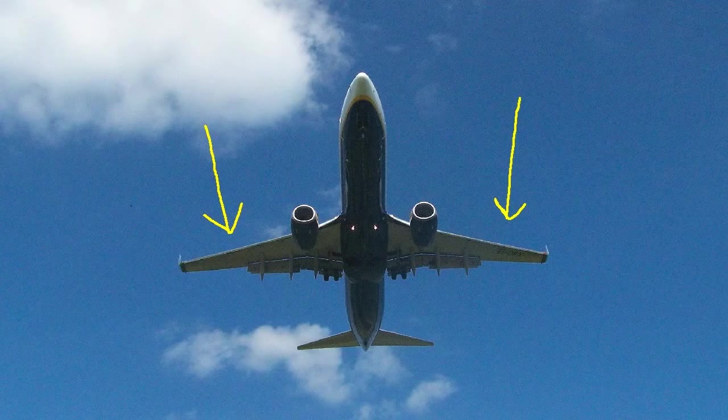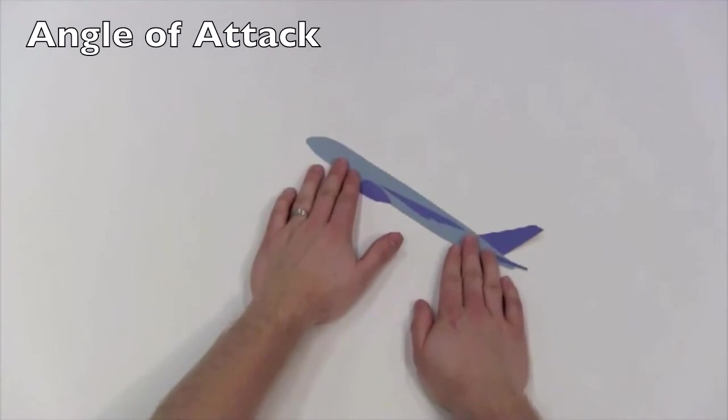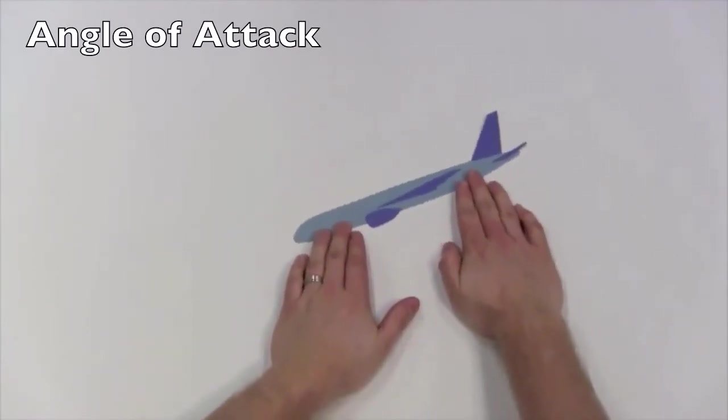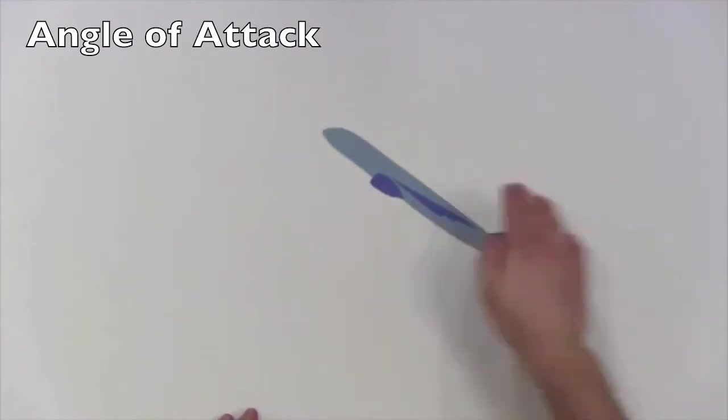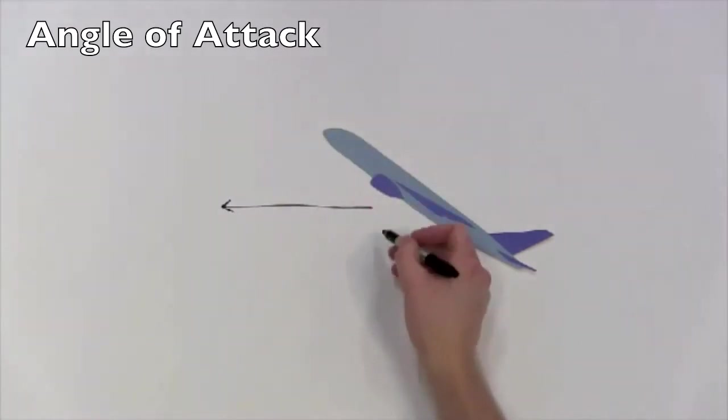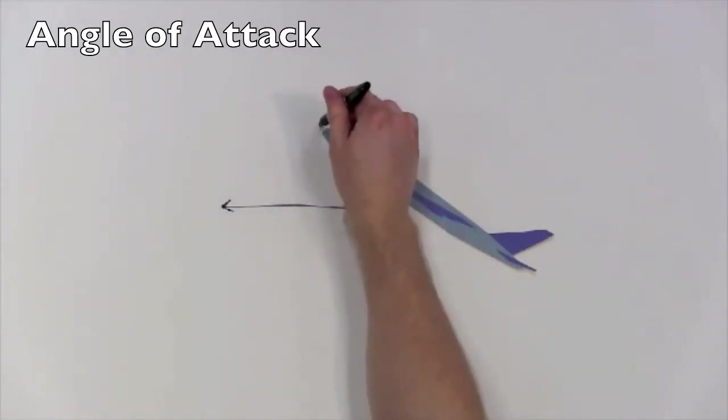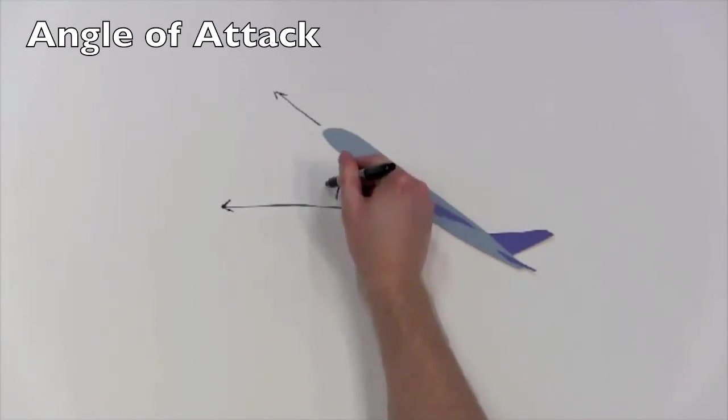It's a number that gives us some information about the shape of the aircraft's wings, these things right here. The coefficient of lift changes with the angle of attack. Angle of what? Aircraft can pitch up and down, and even if they're pitched up they're still traveling in a horizontal direction like that.